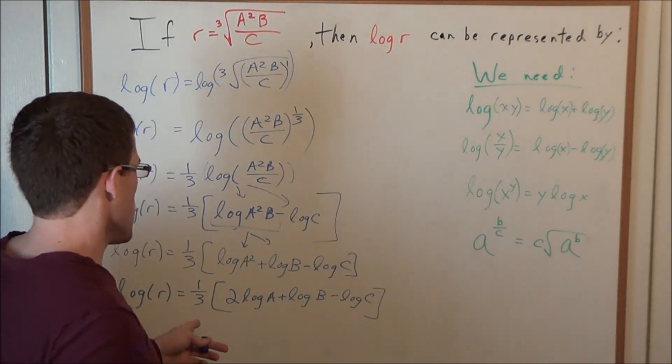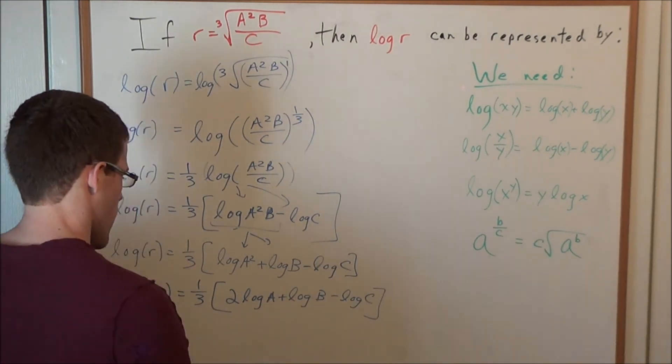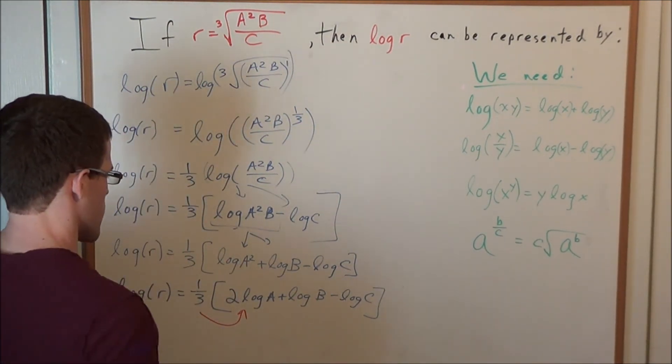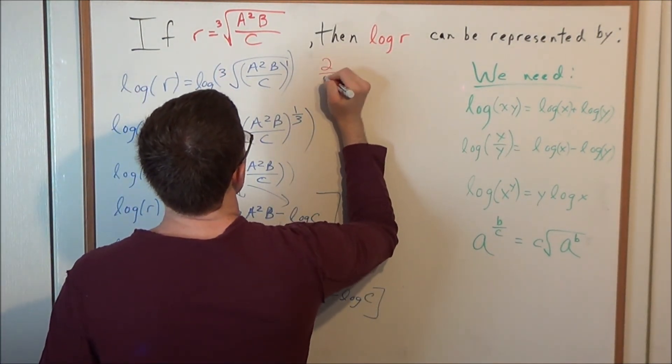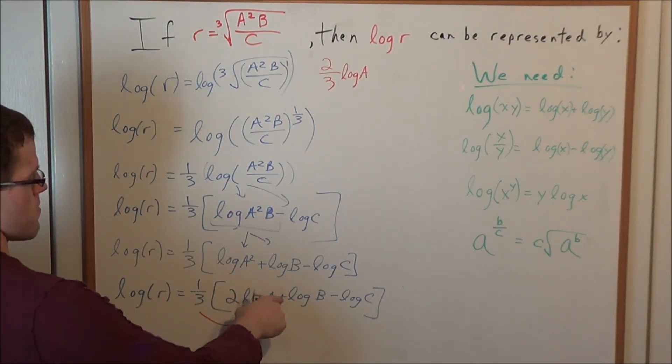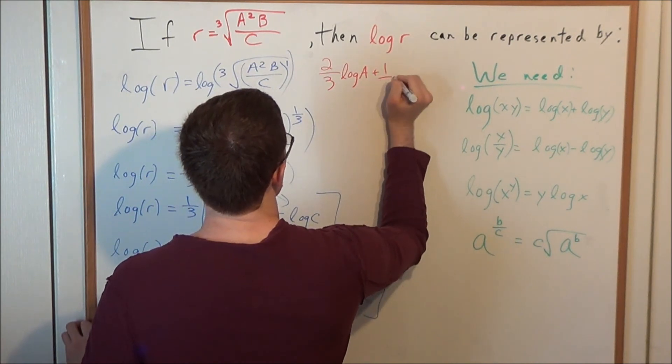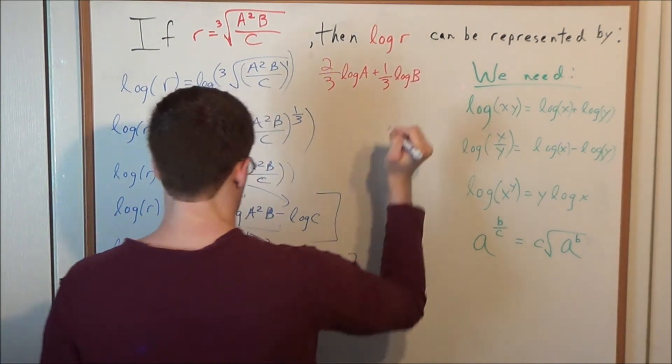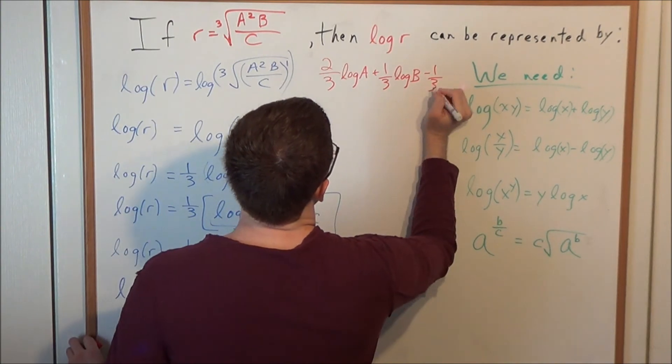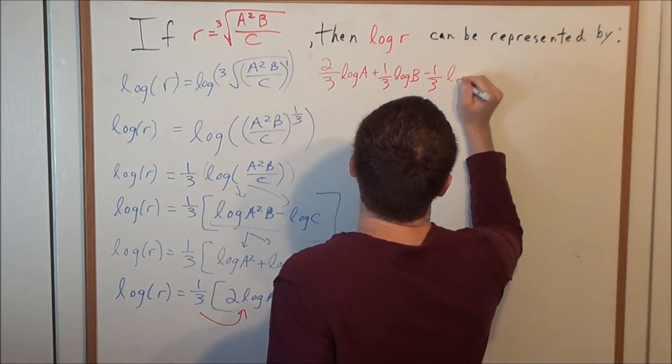And now finally the last step will be to distribute this one-third. Now that everything is expanded inside of the log expressions, we could go ahead and distribute the one-third. So we have a one-third times two log a. This is going to be equal to two-thirds log a. Now we have one-third plus log b. I'm sorry, we have one-third times a positive log b, which is equal to a positive one-third log b. And now finally we have a one-third times a minus log c. So we have minus one-third, minus one-third log c.